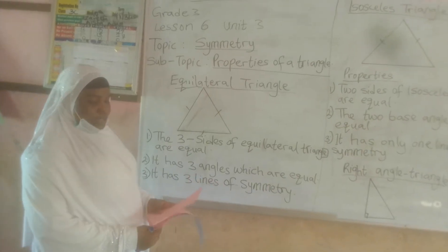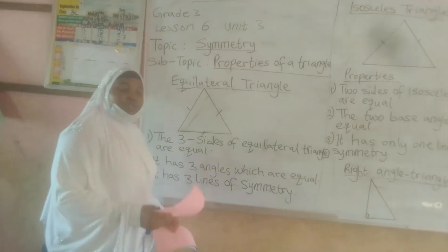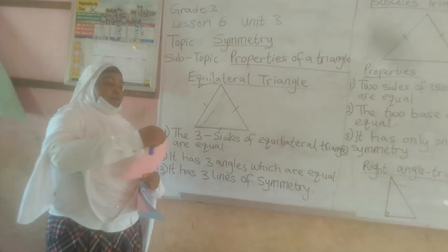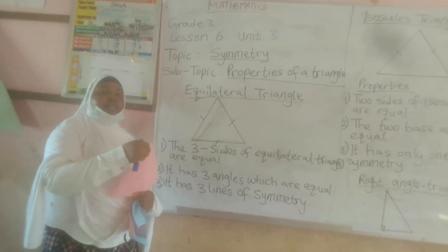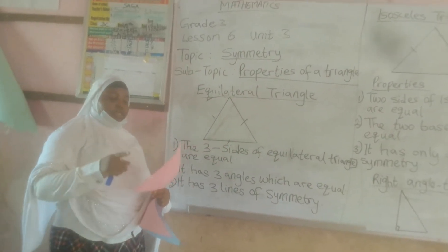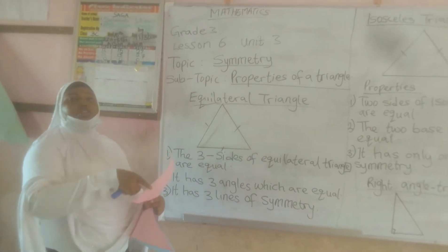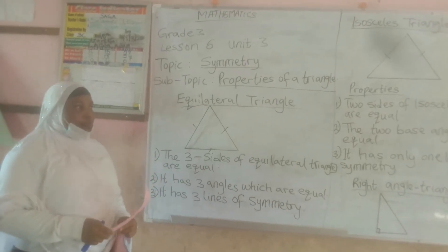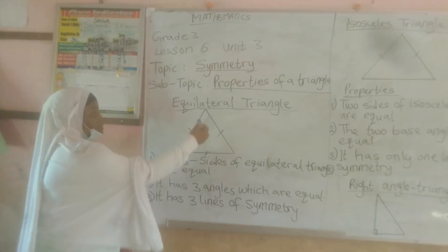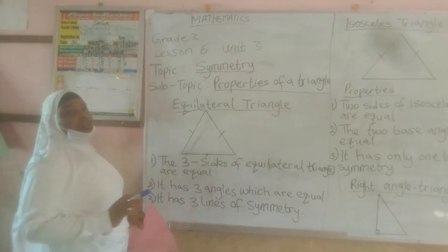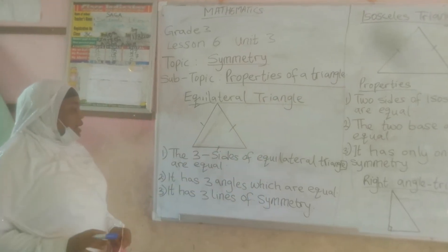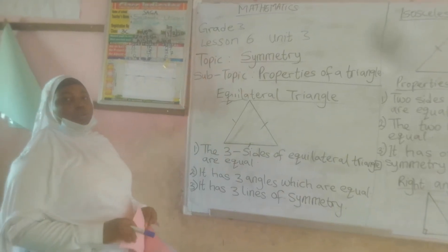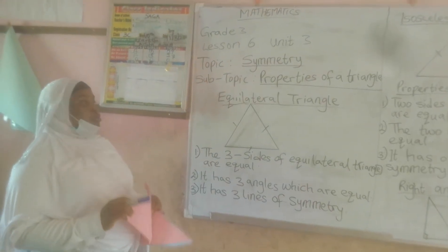The first triangle is the equilateral triangle. The properties of an equilateral triangle is that all the three sides are equal. Look at this: one, two, three. The three sides are equal, and it has three angles which are also equal.